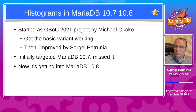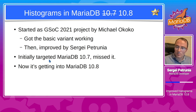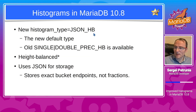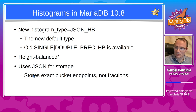This called for improvement. Work started as a Google Summer of Code 2021 project by Michael Okoko. We got the basic variant working during GSoC, then I continued improving it. I initially tried to push it into 10.7 but missed the deadline, so now it's going into MariaDB 10.8. The new histogram type is JSONHB, which is now the default, though old format histograms are still available. The histogram is almost height-balanced, uses JSON format for storage, and stores exact bucket endpoints, not fractions.